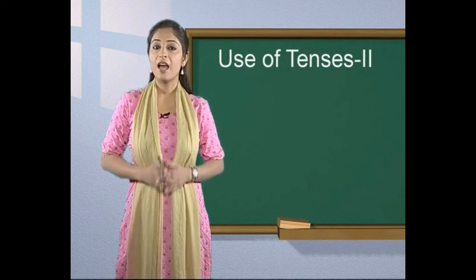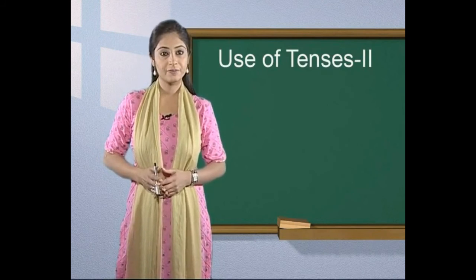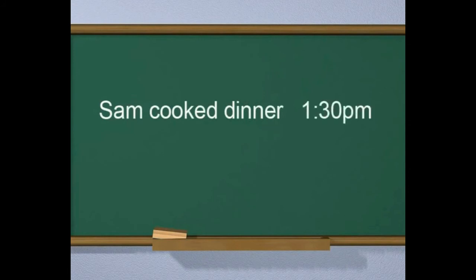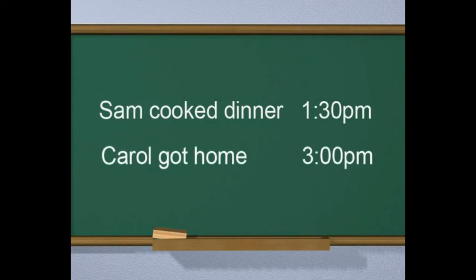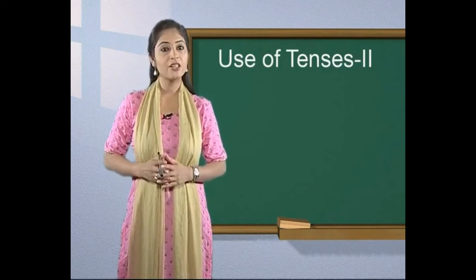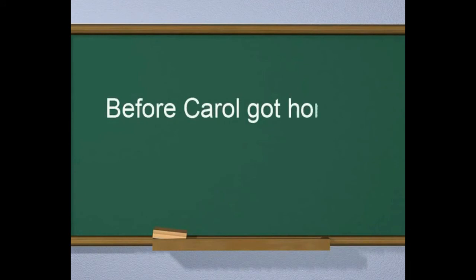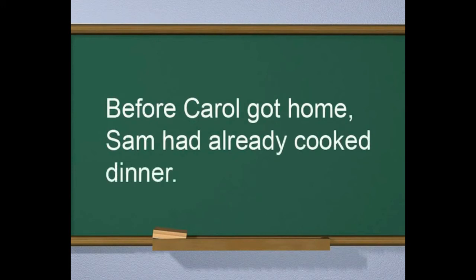Here is another timeline. Look at the timeline and make a sentence with the past perfect and by using the word before. Now, first, Sam cooked dinner at 1:30 p.m. Carol got home at 3:00 p.m. Now, first, Sam cooked dinner. Second, Carol got home. Before Carol got home, Sam had already cooked dinner.